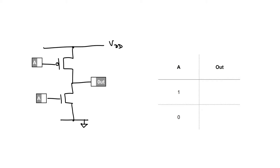Let's fill it in. First, let's look at what happens if I turn A to logic 1 — a voltage close to VDD. The PMOSFET at the top switches off because that one switches on with low voltages. But the NMOSFET at the bottom switches on because that switches on with higher voltages — voltages above 1.2 volts. So now we've got a conducting pathway between our output pin and ground, and so our output is connected to a low voltage and we get a 0 out.